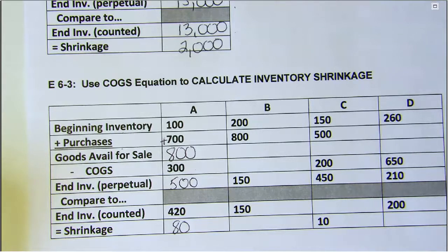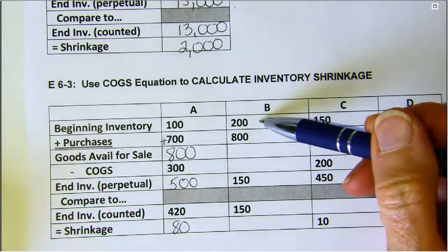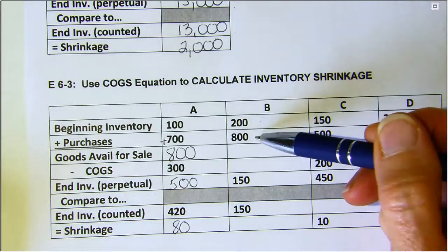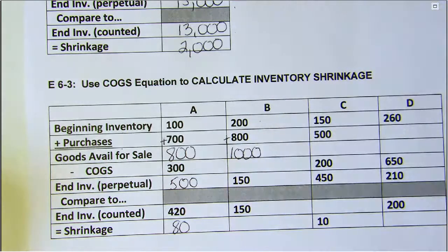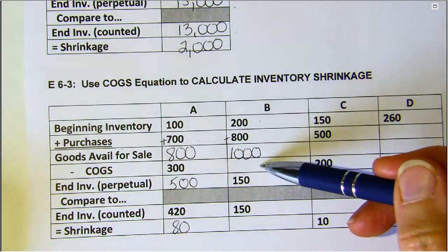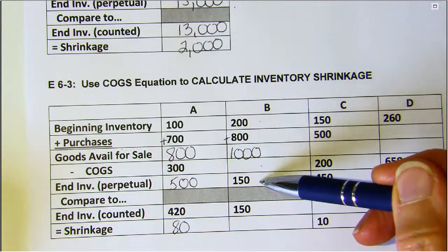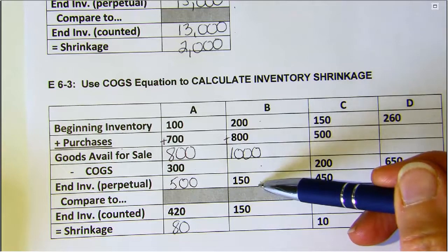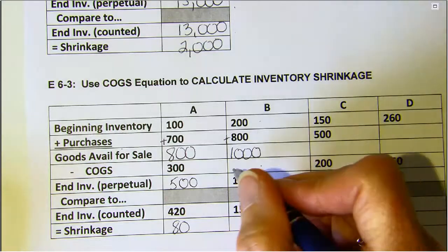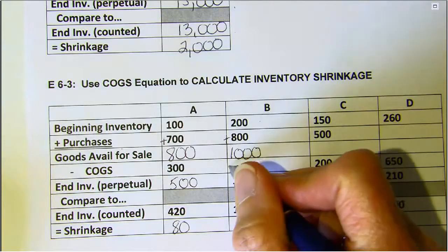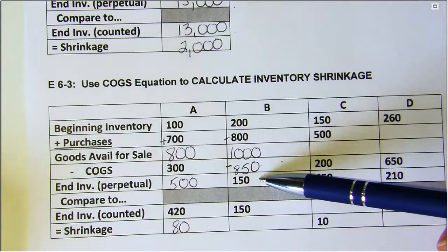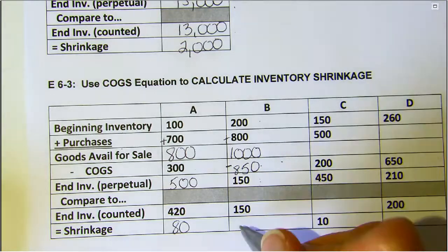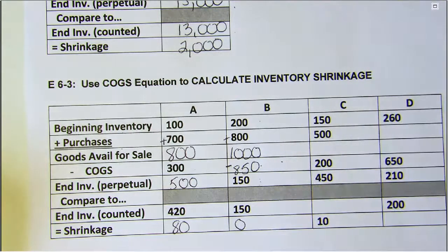Case B: We begin the period with $200 worth of merchandise on hand. We buy another $800, so we have $1,000 in goods available to be sold. They don't give us what was sold, but they tell us what's left. If we've got $150 left, then we must have sold $850 — we can back into that number. If our inventory perpetual records and our inventory count match, we have no shrinkage, no loss due to theft.